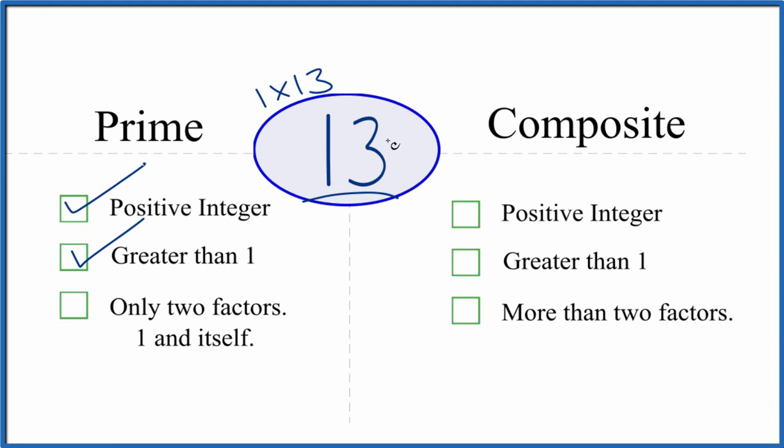But are there any more factors that go evenly into 13? It turns out there aren't any. So there are only two factors, 1 and 13, that go into 13 evenly. So 13 is a prime number.